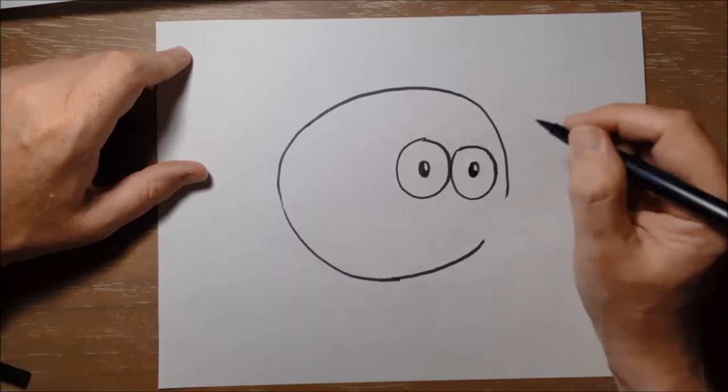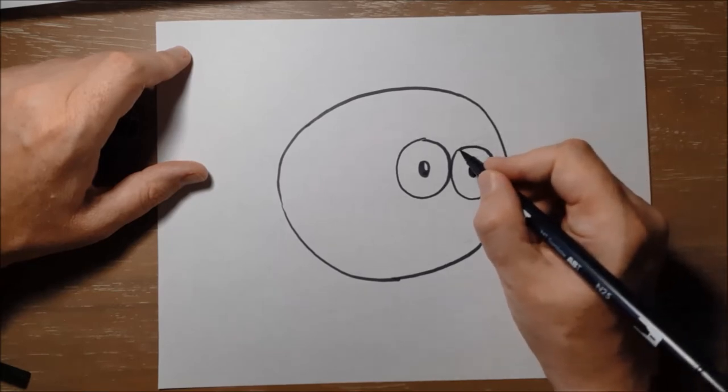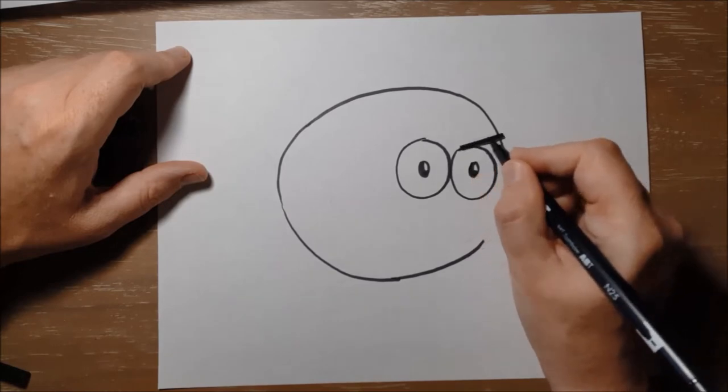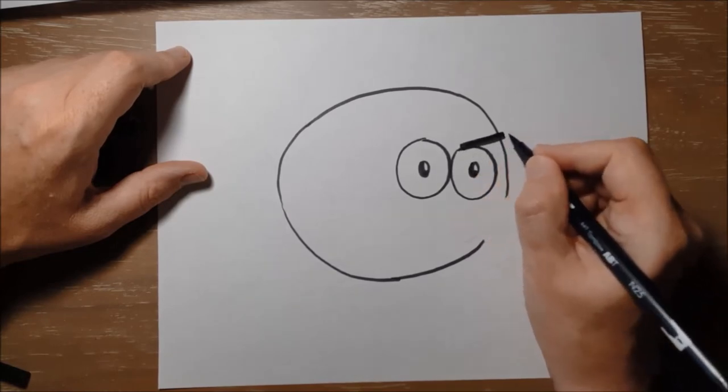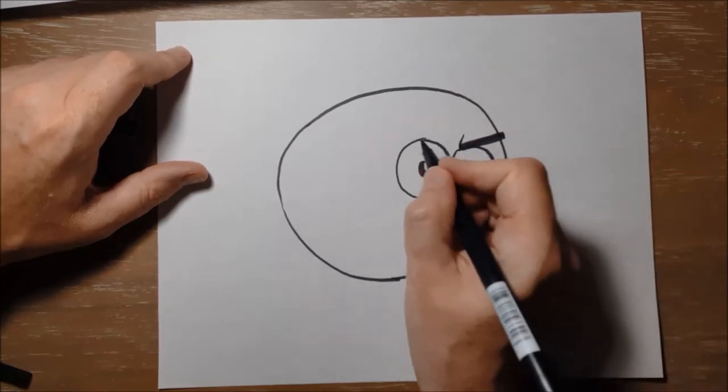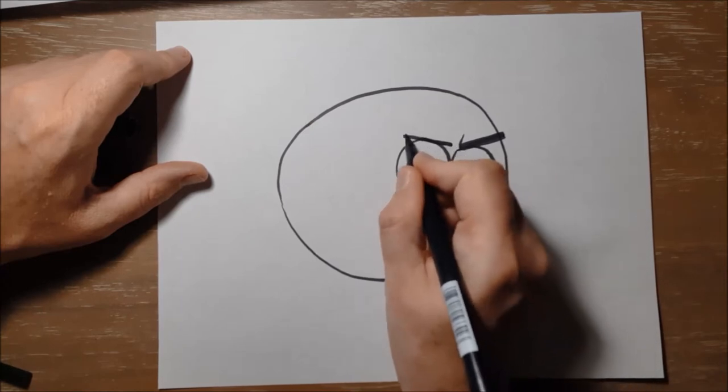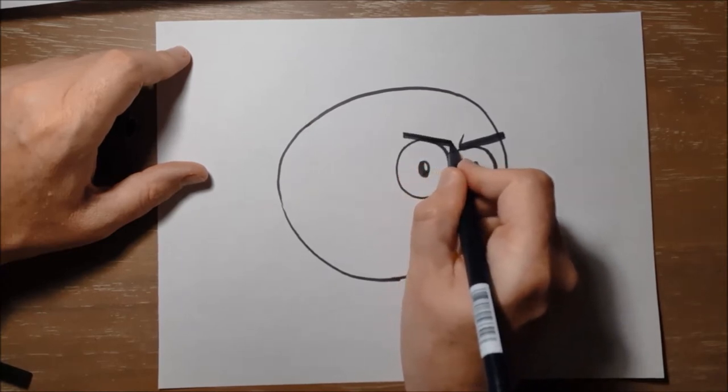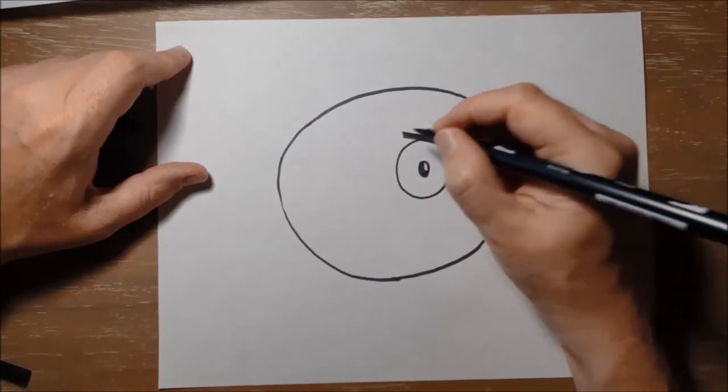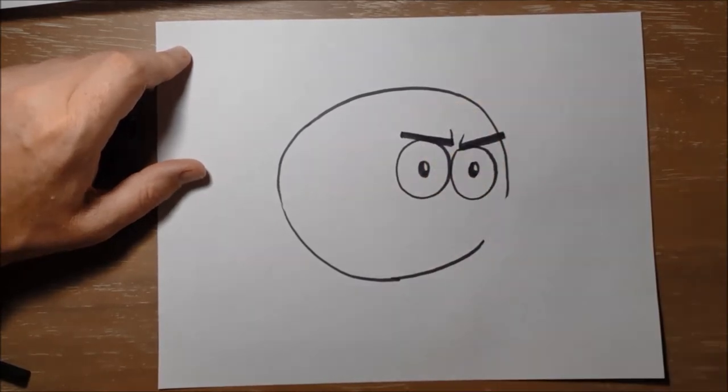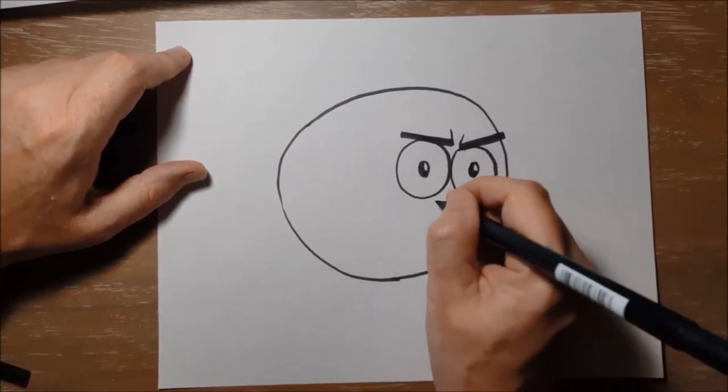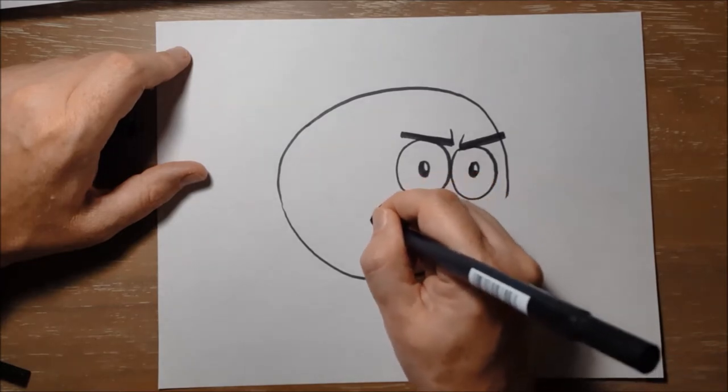The fish has frowning eyebrows. Make a straight line, like this, and one more line. And another eyebrow, a straight line, and another line. The fish has a big, round cheek. Make a big circle under the eye.